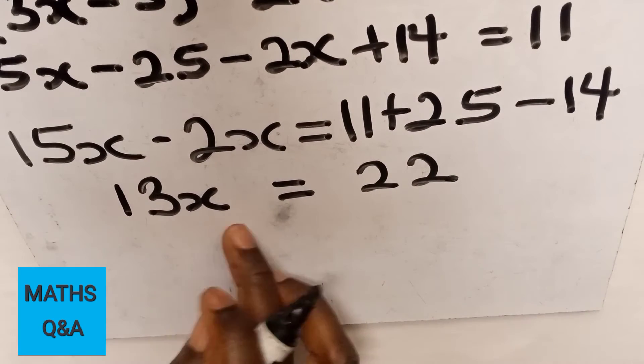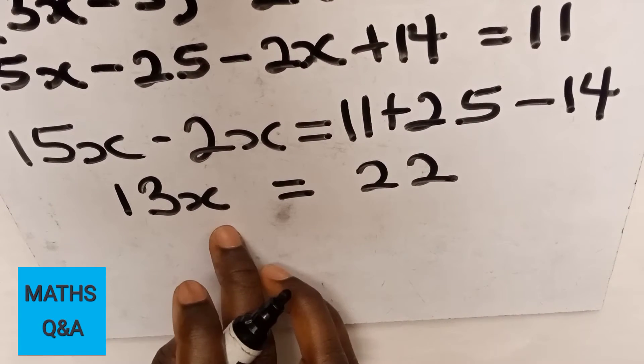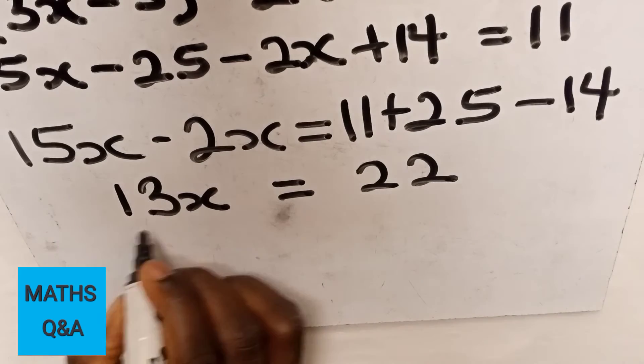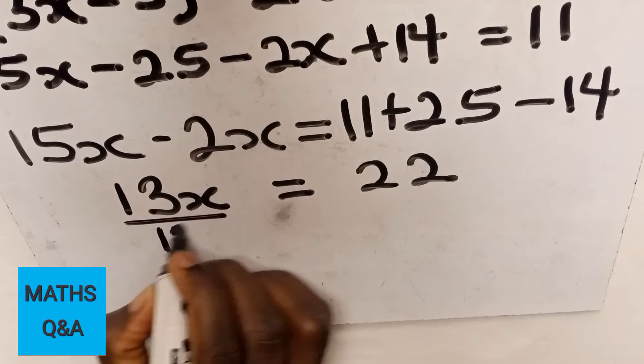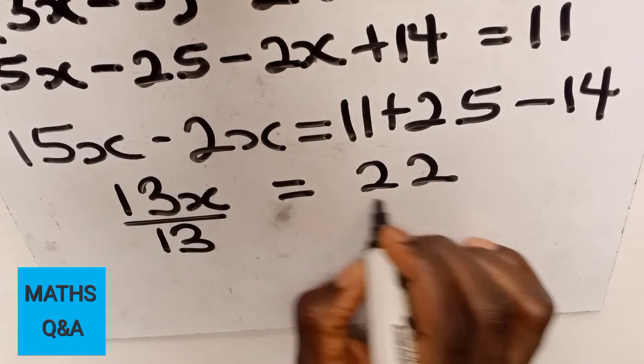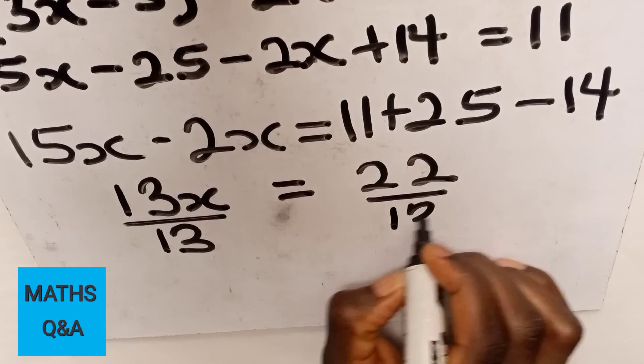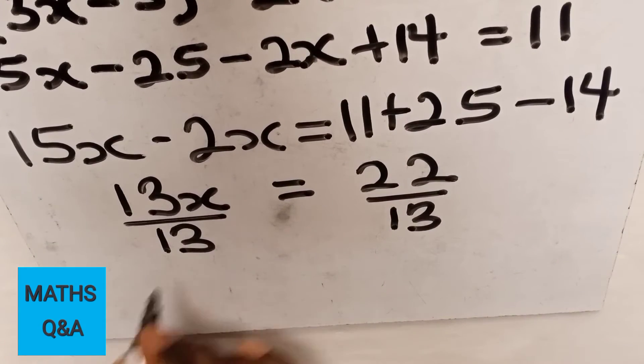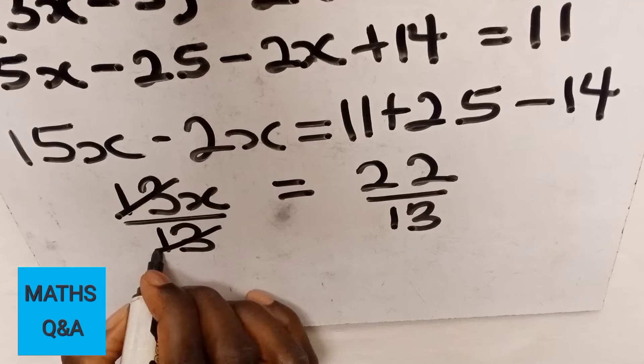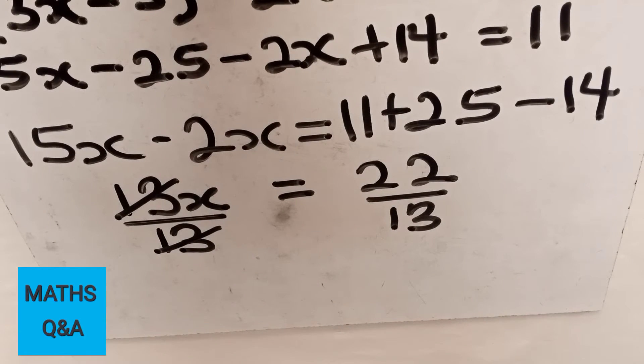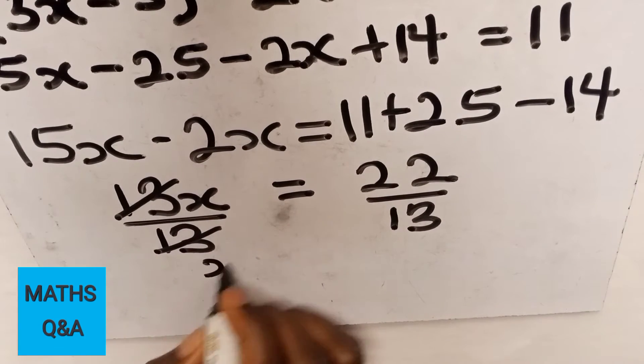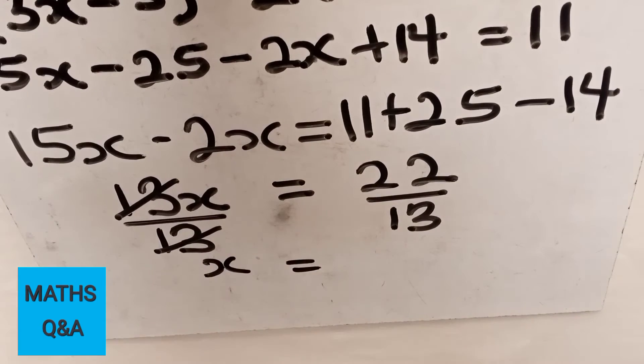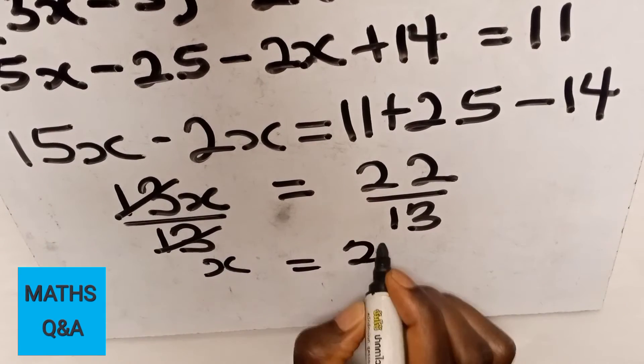Now we want x, we don't want 13x, so what we do is divide both sides by the coefficient of x which is 13. So you divide this one by 13, you divide this side too by 13. So 13 divided by 13 gives 1, 1 multiply x gives x equal to